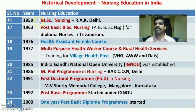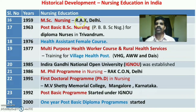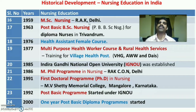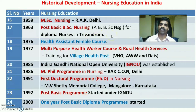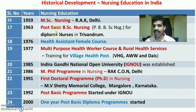In 1959, the first M.Sc. Nursing programme was started at R.I.K. College of Nursing in Delhi. Then in 1963, Post Basic B.Sc. Nursing — also called Post Certificate B.Sc. Nursing — was started at Trivandrum College of Nursing, that is Government College of Nursing, Trivandrum. The School of Nursing at Trivandrum was upgraded to offer the Post Basic B.Sc. programme in 1963.